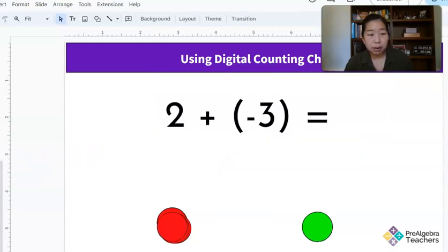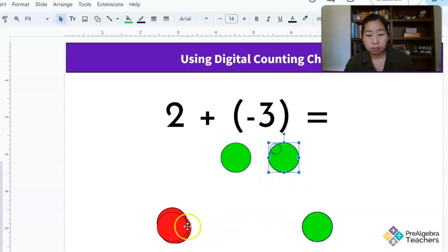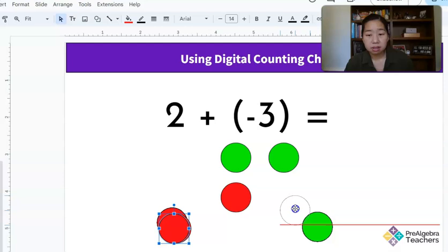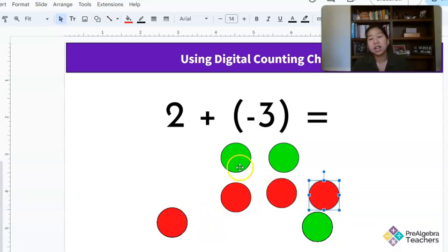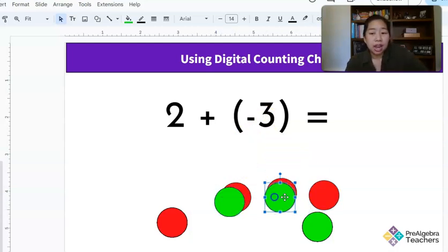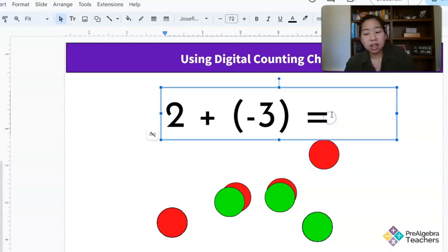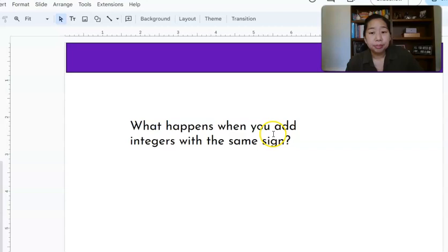So let's see if this example, if that theory is true in this example, I have two positives and three negatives. Which number is bigger if I didn't have a negative there? Three, right? So these zero out and I'm left with negative one. Yeah, that seems to kind of be true. Hmm. What happens when you add integers with the same sign?